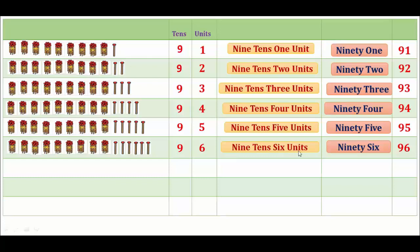97. Here, 1, 2, 3, 4, 5, 6, 7, 8, 9 tens and 1, 2, 3, 4, 5, 6, 7 units.